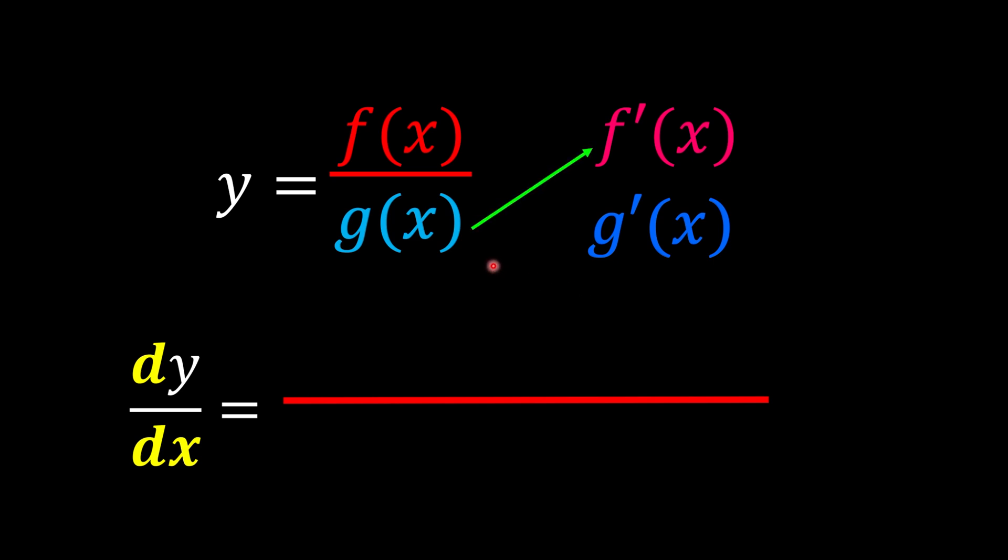We always start from the bottom. We go bottom up, just like us learning since we're in kindergarten, slowly we climb up to become an adult. So g(x) times f' is the first step. We're going to put it down first.